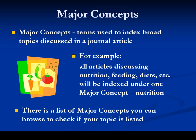In my search I'll be using major concepts. Major concepts are terms used to index broad topics discussed in a journal article. For example, all articles discussing nutrition, feeding, diets, etc. will be indexed under one major concept: nutrition. In many databases you need to think of all the words an author might have used to describe a topic, but by using a major concept the database has done the work for you and you only need to use the one term.